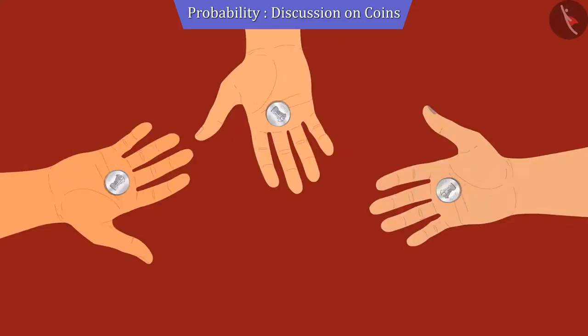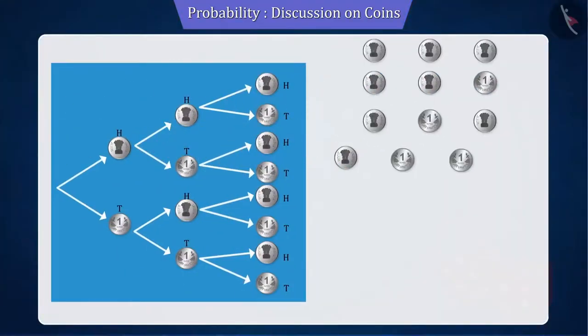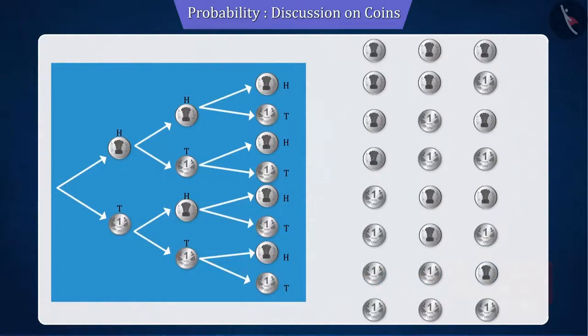Here, you can see that some results are obtained by tossing all three coins together. So, let's write all these outcomes first.